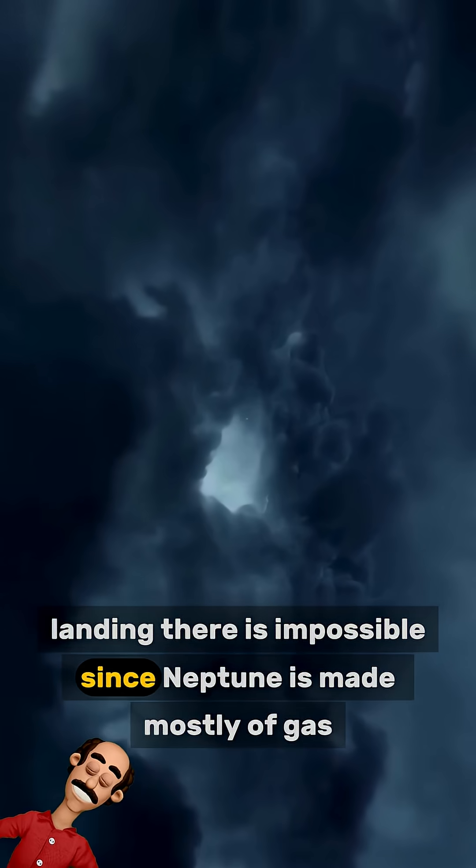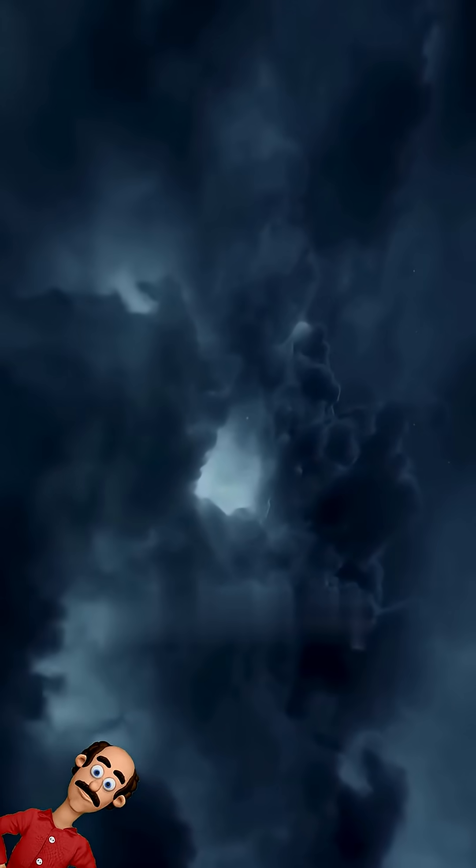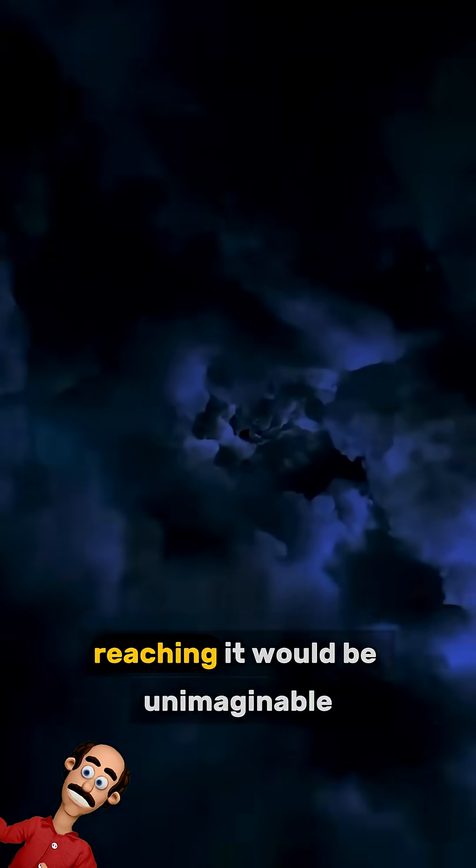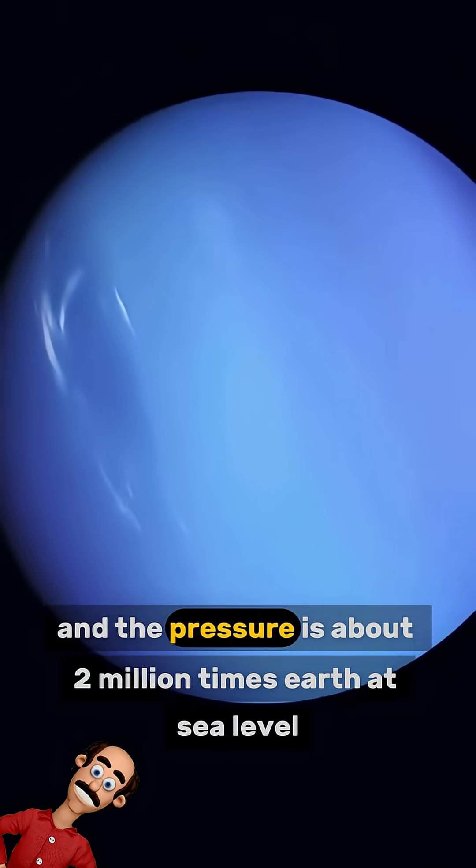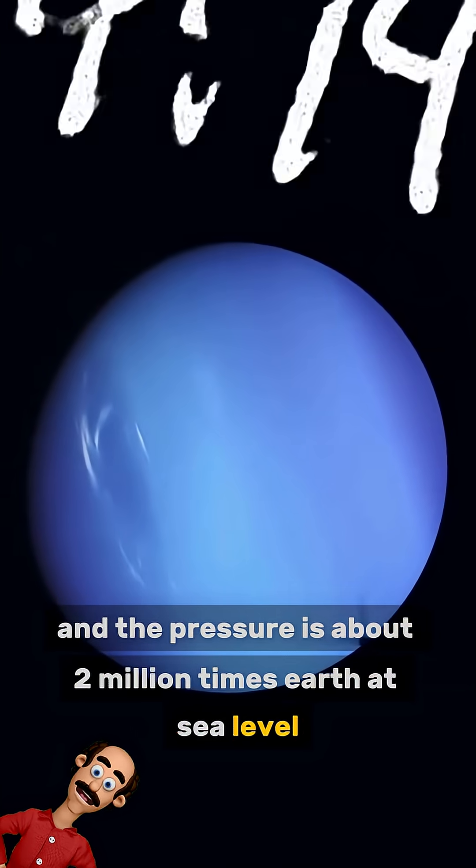Landing there is impossible since Neptune is made mostly of gas. Even if a rocky core exists, reaching it would be unimaginable. Temperatures exceed 5,000 degrees Celsius, and the pressure is about 2 million times Earth's at sea level.